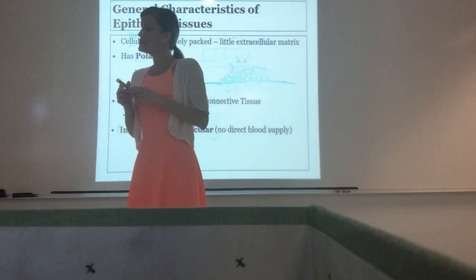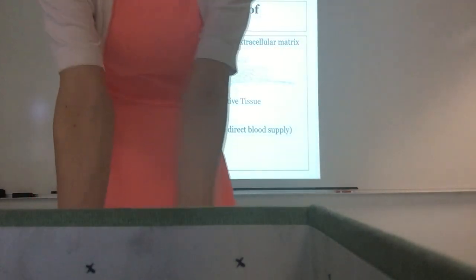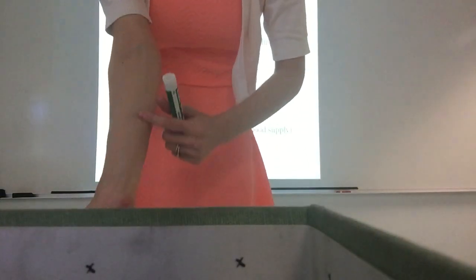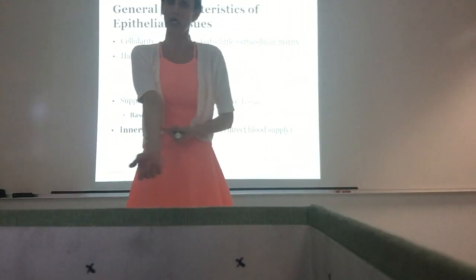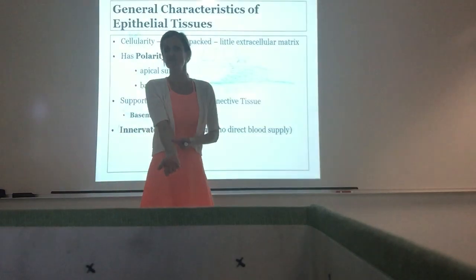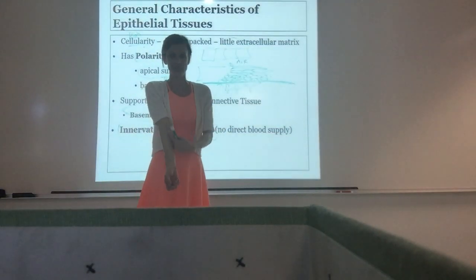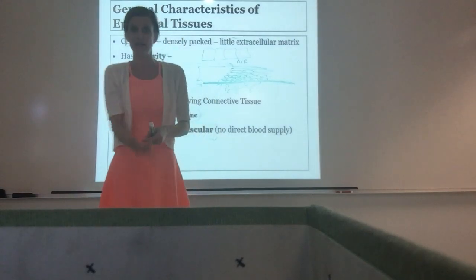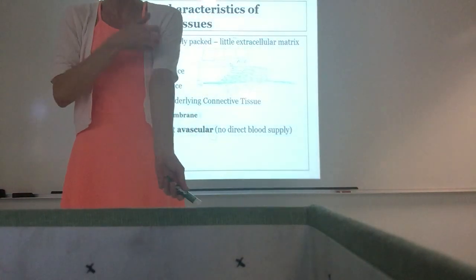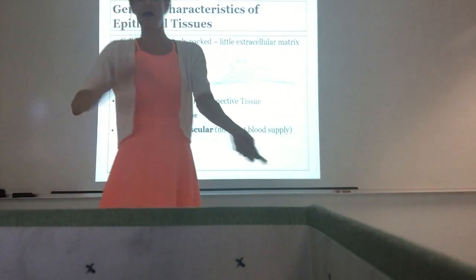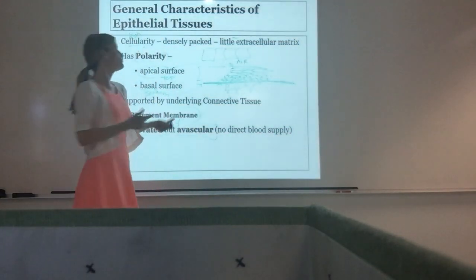Epithelial tissue does not have a blood supply — it is avascular. The vessels you see are underneath, deeper in the connective tissue below. The epithelial tissue does not have a direct blood supply, which makes sense — if you had vessels right on the surface, any little scratch would make you bleed. They need to be down deeper so they're protected.